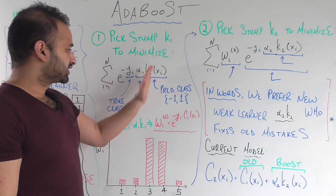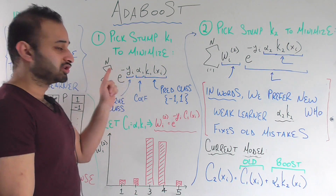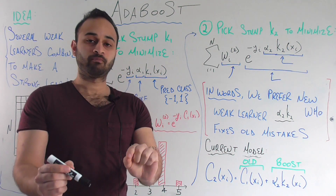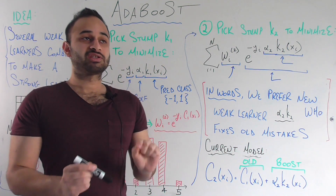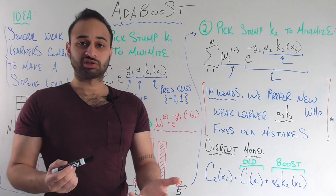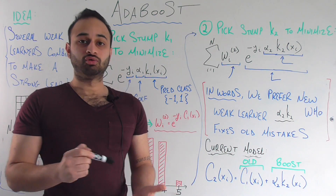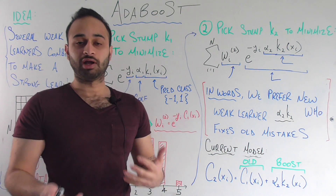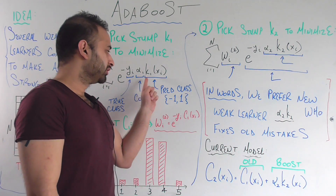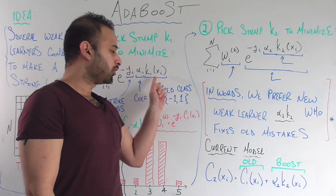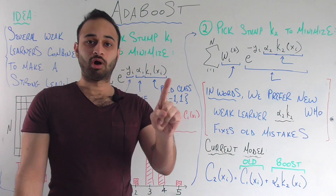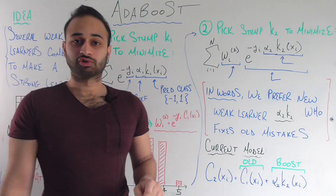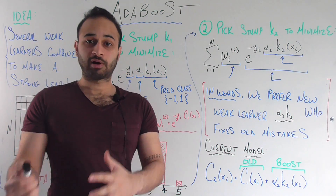So let's say that y i is equal to one, which means that the student truly does get in. That means that we would like the decision stump we pick to also predict that the student gets in — we want it to match up, we want good accuracy. So we would want k one of that student to be equal to one. Now if k one is equal to one and y i is equal to one and alpha is positive, then we're going to have e to the power of a negative number, which is going to be small.